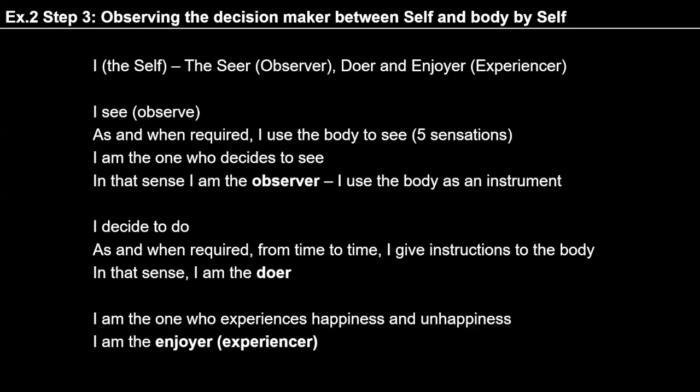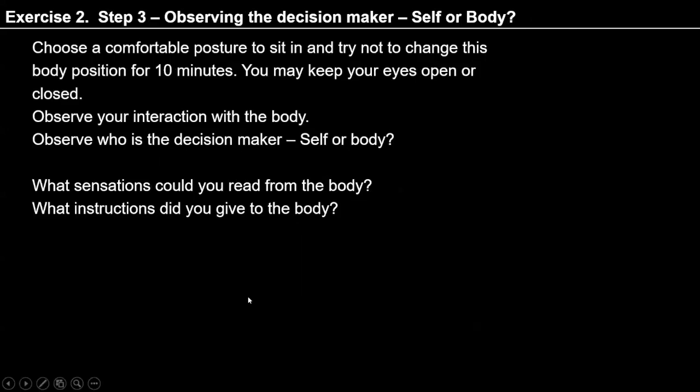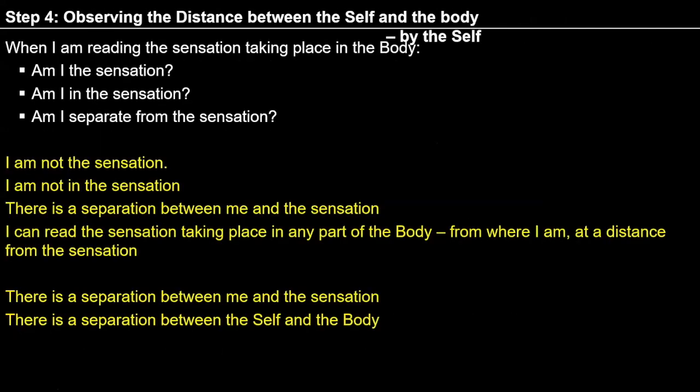Body is just an instrument — what I say, body just follows. I am seer means I can observe myself and my body; doer means I decide when to instruct my body and when to read sensation; enjoyer means once I decide what to do with this information, I experience happiness and unhappiness of my decisions. So in step 4 I am trying to observe the separation between the two units — between me and body. When I decide to read a particular sensation, I ask: am I the sensation? Am I in the sensation? Am I separate from the sensation? Whenever I ask these questions I get the answer: I am not the sensation, I am not in the sensation, there is separation between the two. So I can see that I am separate from body, at a distance from the body, not bound with the body.